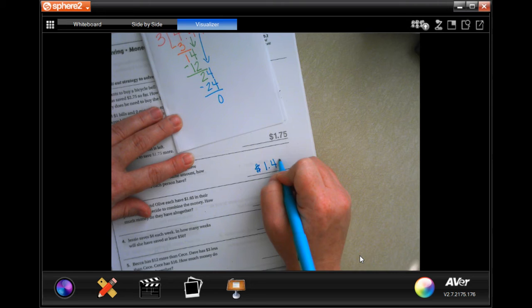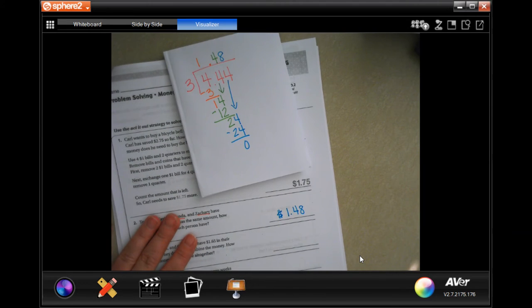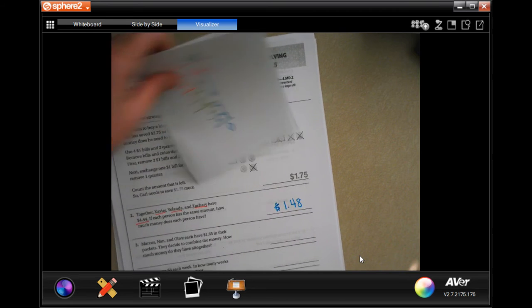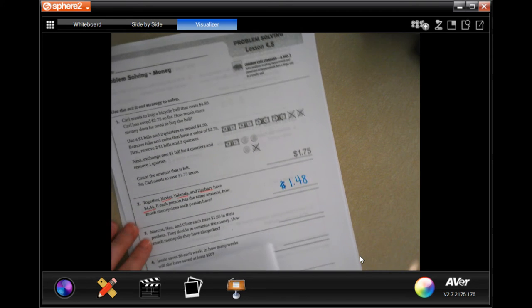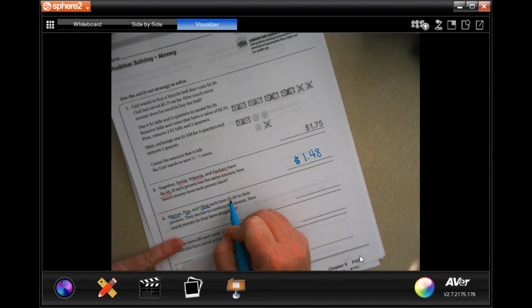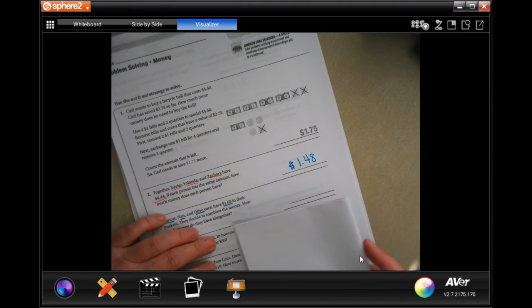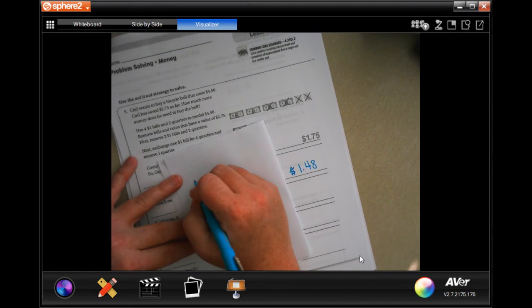Market, Nan and Olive each have one dollar and sixty-five cents in their pocket. They decide to combine their money. How much money do they have all together? So one dollar and sixty-five cents and there's three of them.